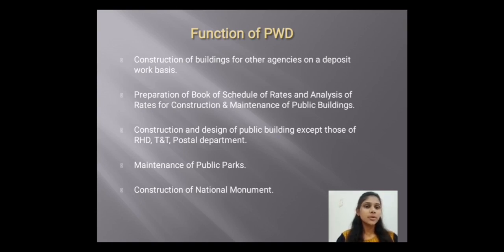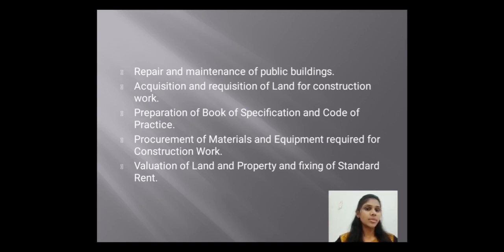The second slide contains the functions of PWD. There are various functions of the PWD. First is the construction of buildings for other agencies on an adoption work basis. Second is preparation of schedule rates and analysis, the rate of construction and maintenance of public buildings. Third is the construction and design of public buildings except those of RHD and T and Postal Department. Fourth is the maintenance of public parks. Fifth is construction of national monuments. Sixth is repair and maintenance of public buildings. Seventh is the occupation and recreation of land construction work, and also the preparation of books of specification and code of practice. Eighth is procuring material and equipment required for construction work. Last is the valuation of land and property and fixing the standard rate.